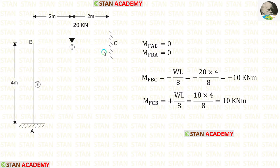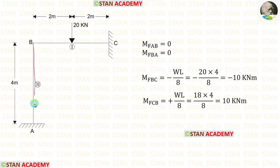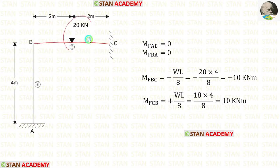You can see that I have assumed the point C is fixed. Now let us find the fixed end moments. In the column AB there is no load, so the fixed end moments will be 0. In the span BC, we have a point load acting at the center. Using these formulas, we can find the fixed end moments.